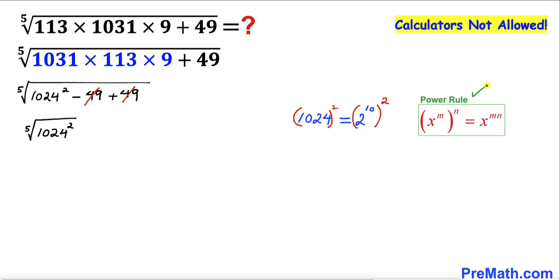Let's recall this power rule of exponents. On the right hand side we are going to multiply out these nested exponents. Therefore we can write 1024 squared equals 2 to the power 20.